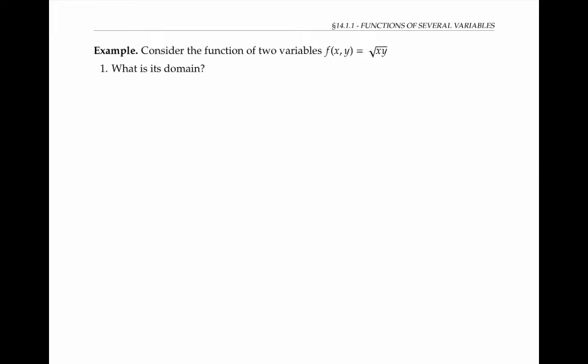Consider the function of two variables f(x,y) equals the square root of xy. Notice that this function has two input variables, x and y. When I plug in numbers for x and y, for example five for x and two for y, I get the square root of five times two, or the square root of 10, which is a real number. But not all input values for x and y give me a real number as output.